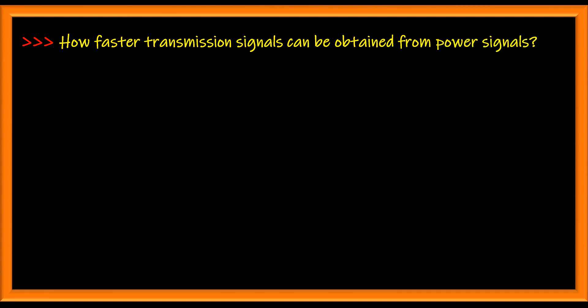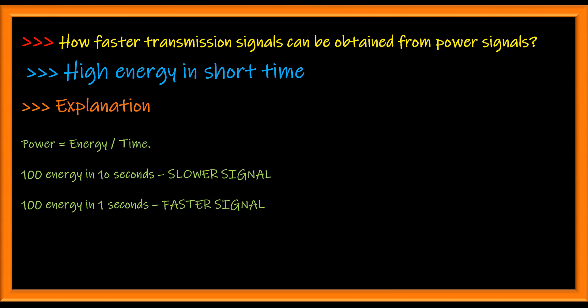How can faster transmission signals be obtained from power signals? By sending high energy in a short time. If you send high energy in a short time, you have a faster signal because it has to deliver that much energy in a short period. Whereas if you use the same energy over a longer period, you slow down the signal. A perfect analogy would be car acceleration versus fuel consumption.